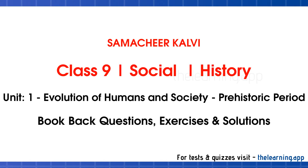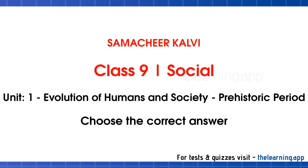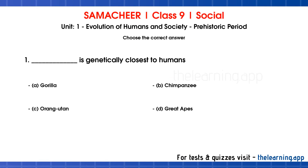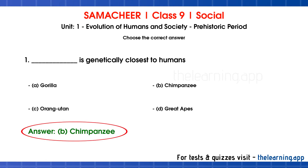Now we will talk about the first question. Choose the correct answer. First question: dash is genetically closest to humans. Options are A) Gorilla, B) Chimpanzee, C) Orangutan, D) Great Apes. The correct answer is Option B, Chimpanzee. Note that Chimpanzee, Gorilla, and Orangutan are all Great Apes.